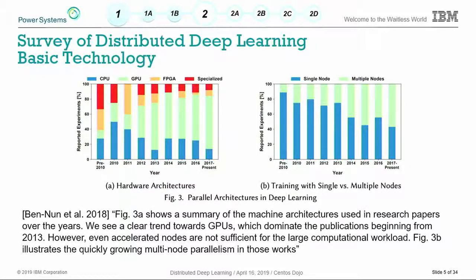This graph is interesting — they surveyed papers published in deep learning and mapped whether they focused on GPUs, CPUs, or FPGAs. The green bar represents GPUs, and going from 2010 to now you see it getting bigger and bigger — a clear move towards GPUs. In the right graph, green represents distributed multi-node training and blue represents single-node training. Again, you can see that trend towards distributed training — it's a definite trend that's happening.